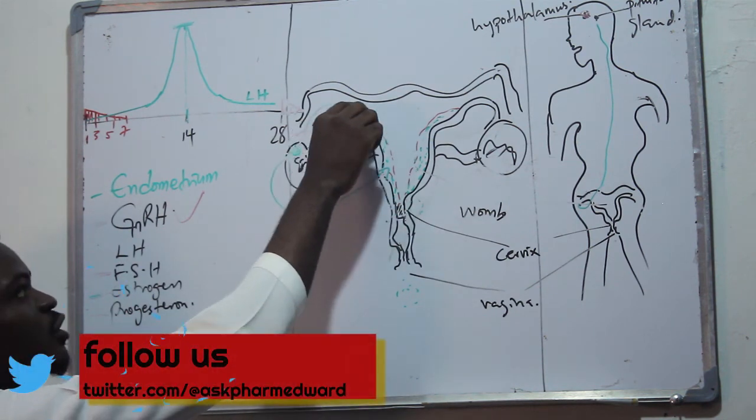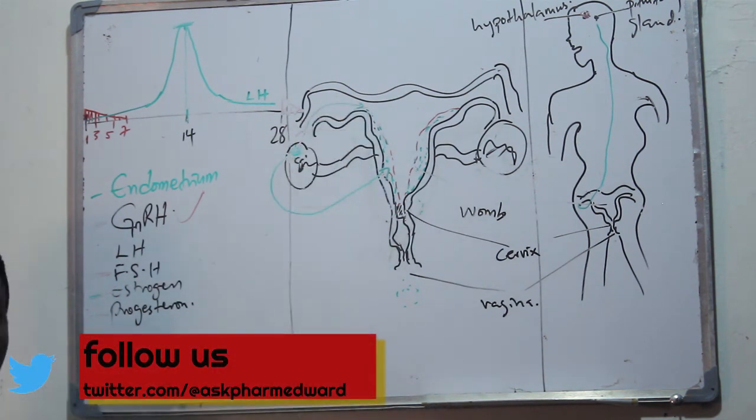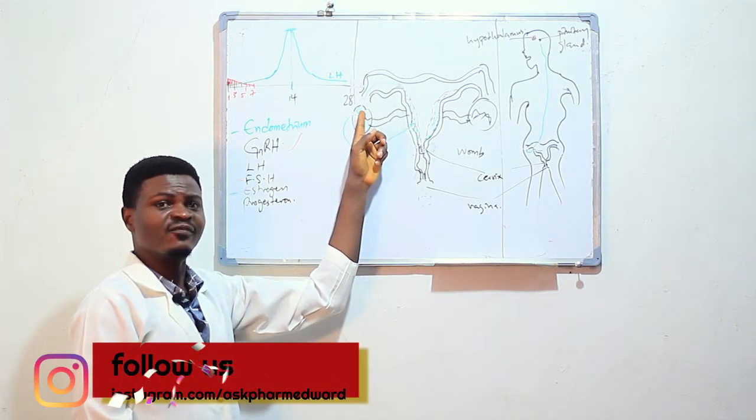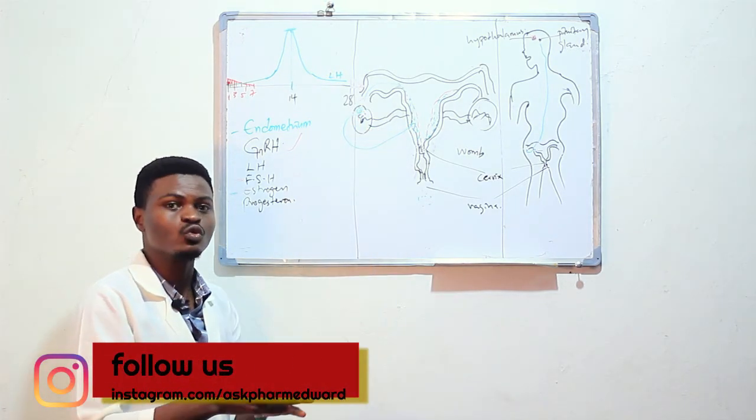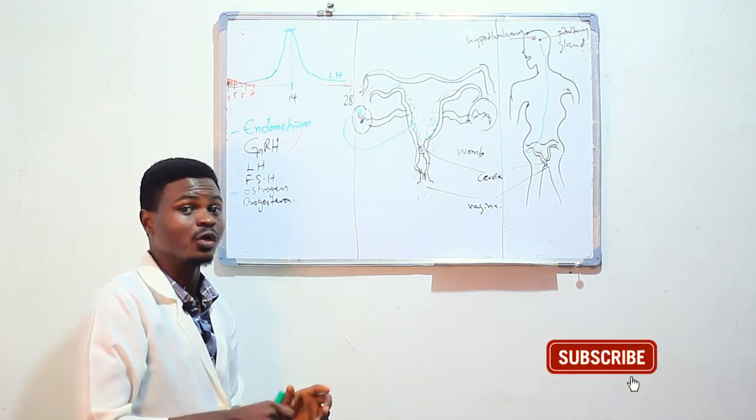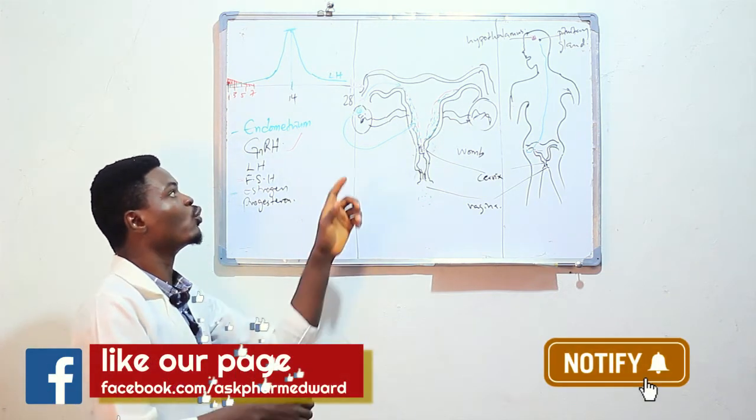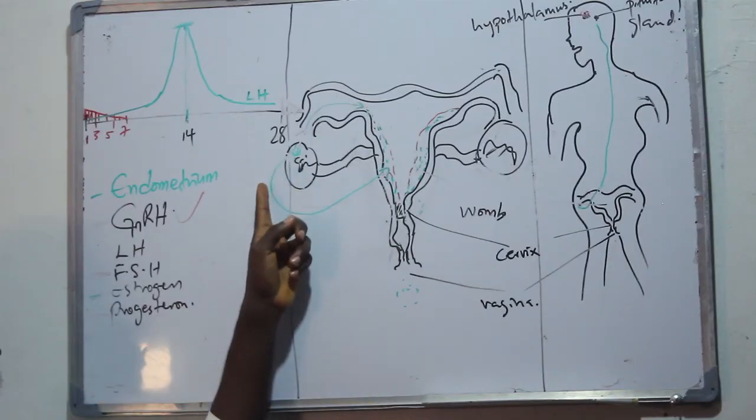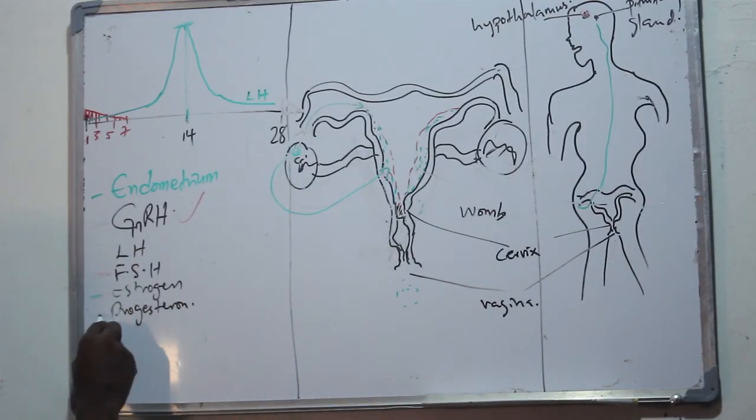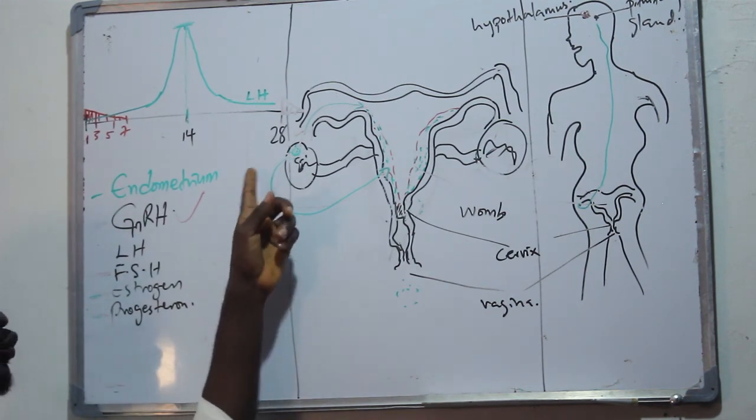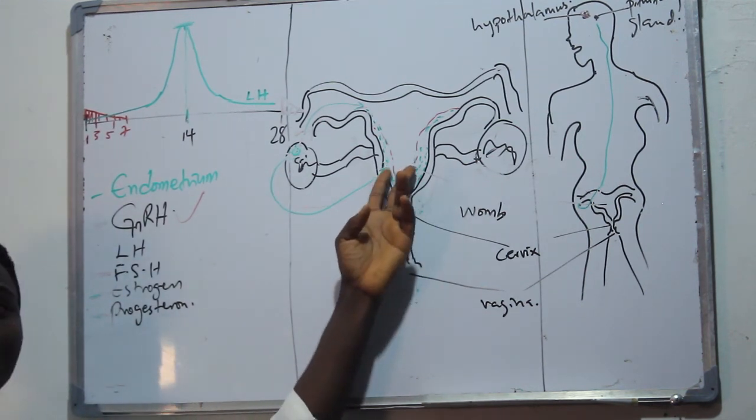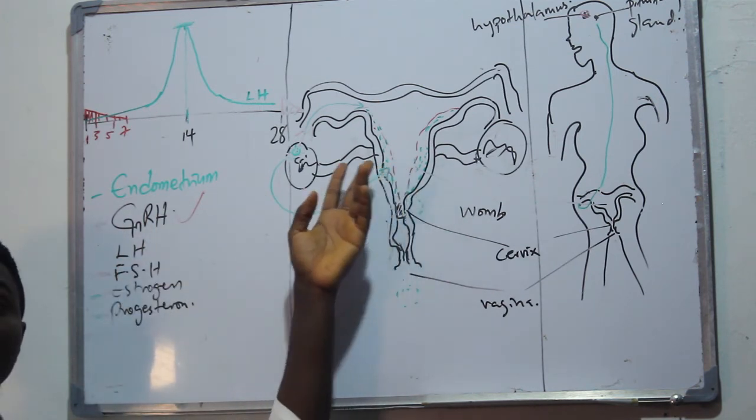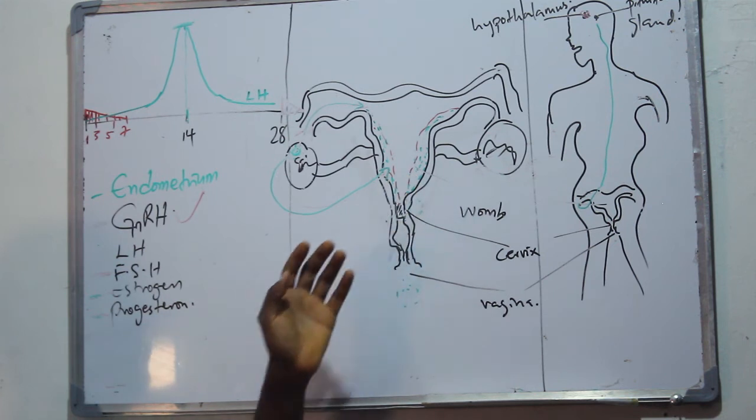The empty follicle will transform into what we call the corpus luteum, a yellowish substance called the corpus luteum, which will now begin to produce another hormone called progesterone. This progesterone will maintain the developed endometrium. Remember, the estrogen aided the development of the endometrium.